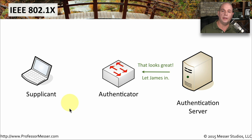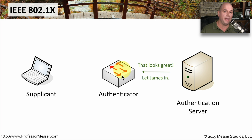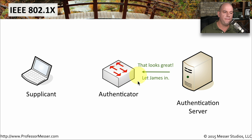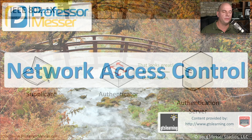If your username, password, and any other credentials are correct, the authentication server sends a message to the authenticator saying everything looks fine — you can now let the supplicant gain access to the network. Since this is usually running in the switch, the authenticator configures the switch port to enable access. It will also provide a configuration on that interface with the VLAN generally associated with your username. So when you connect, if you're part of the IT department, you'll automatically be on the IT VLAN; if you're part of the marketing department, you'll be on the marketing VLAN. This process is both an authentication method and a way to configure switch ports to match the requirements of the connecting user.